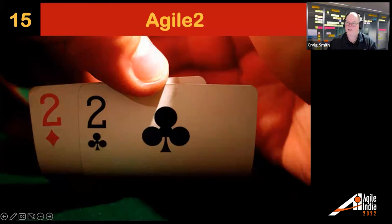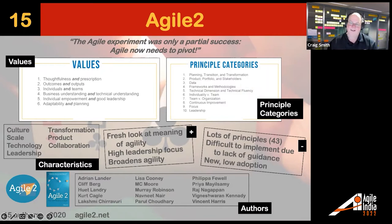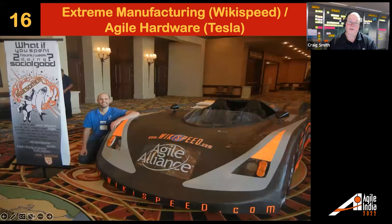A few folks said we need to do something different with Agile, and so we ended up with Agile 2, which came out in 2020 with 43 principles around agility. I have to say — if they were smart, they would have come up with 42 principles, which would have been the meaning of life; they missed a geek calling there. Nonetheless, there are some interesting things around its values and principles. The problem is it doesn't provide a lot of guidance and is just a bunch of ideas, but it may start to evolve over time.